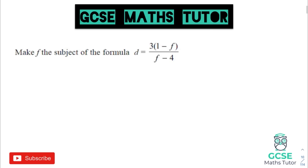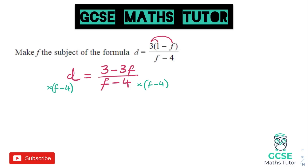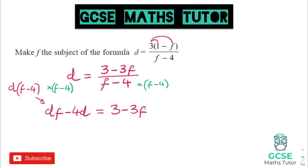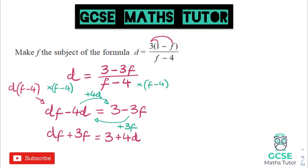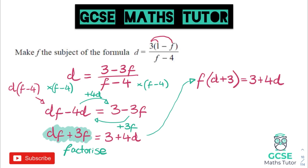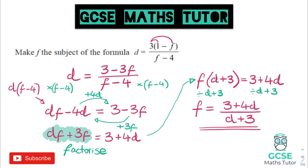Moving on to algebra: if you have to rearrange a formula where the subject appears in two different places, get rid of any fractions or brackets first — here we expand the bracket and multiply the denominator over. Once you've done this, move all instances of the subject to the same side. Move all the f's to the left and the d's to the right, then factorize the left-hand side so those two f's turn into one. We can then divide and get that as the subject.